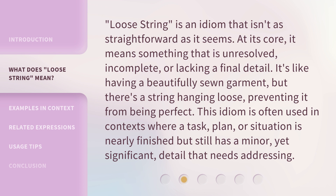Loose string is an idiom that isn't as straightforward as it seems. At its core, it means something that is unresolved, incomplete, or lacking a final detail. It's like having a beautifully sewn garment, but there's a string hanging loose, preventing it from being perfect. This idiom is often used in contexts where a task, plan, or situation is nearly finished but still has a minor yet significant detail that needs addressing.